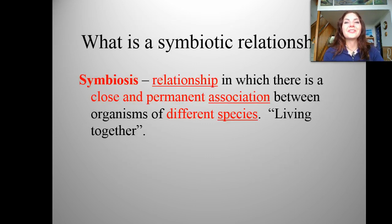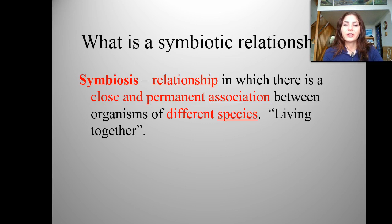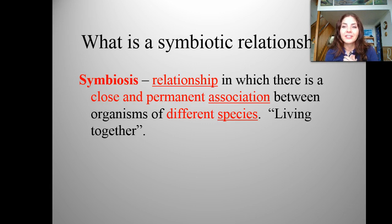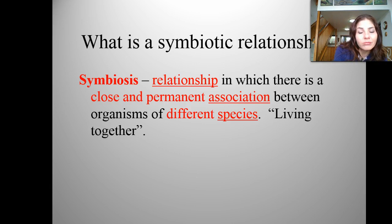Now we're going to get to our symbiotic relationships. Symbiotic relationships are when there's a close and permanent association between organisms of different species living together. For example, I have a symbiotic relationship with my two amazing little dogs, Emma and Molly. I would say I have a mutualistic relationship with them, because I give them lots of love, care, food, and water, and in turn they give me love and affection. That would be a mutualistic relationship.